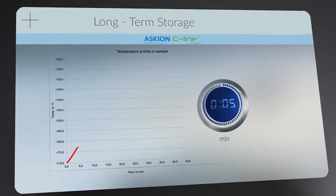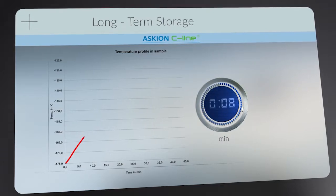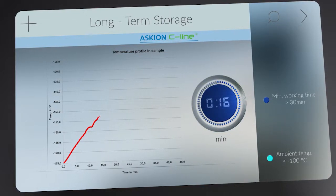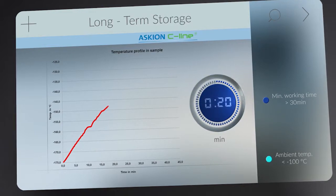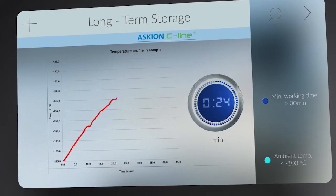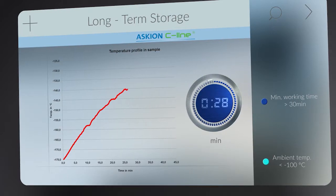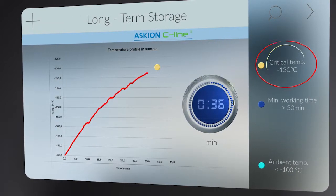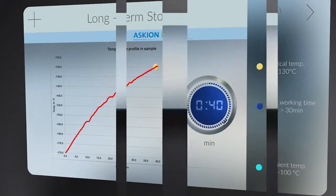The cryogenic working area in the access tower with temperatures down to minus 100 degrees Celsius guarantees an uninterrupted cooling chain. It enables you to handle samples for more than 30 minutes without exceeding the critical temperature of minus 130 degrees Celsius.